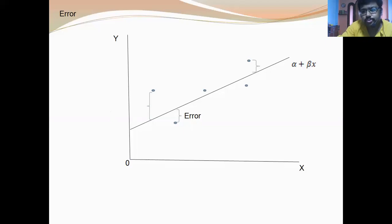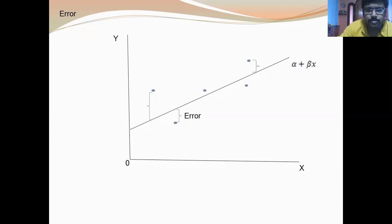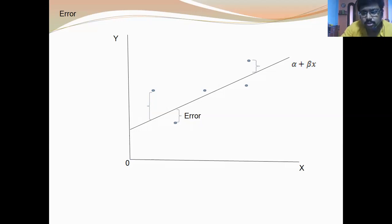For that reason, this equation is also called the stochastic relationship. Now we plot this relation in a two-dimensional space: along the horizontal axis we measure the independent variable X, and along the vertical axis we measure the dependent variable Y. As the independent variable increases, if we do not consider the error term,